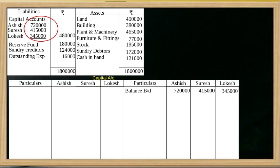The capital accounts for Ashish, Suresh, and Logesh are opened. The next item is the revaluation account credit or debit entry. Since there is a revaluation loss, we debit each partner's capital account and credit the revaluation account. Revaluation loss: Ashish Rs. 10,000, Suresh Rs. 6,000, Logesh Rs. 4,000.